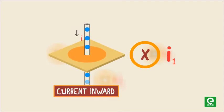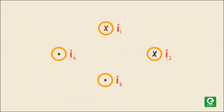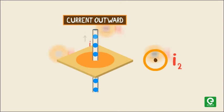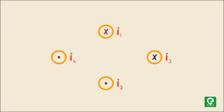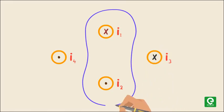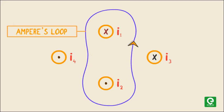Suppose we have wires i₁, i₂, i₃, and i₄, where cross denotes the inward direction of current and dot denotes the outward direction. If we draw an imaginary loop covering currents i₁ and i₂ and assume the direction of the imaginary loop is anti-clockwise, this loop will be known as Ampere's loop. The magnetic field on this loop due to all wires is equal to B_net.